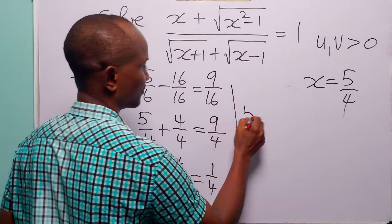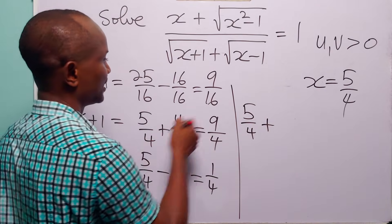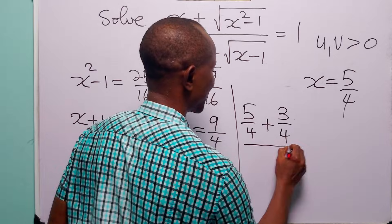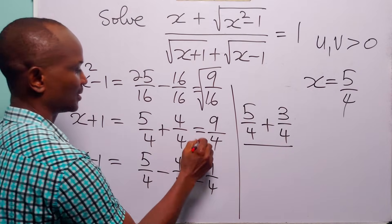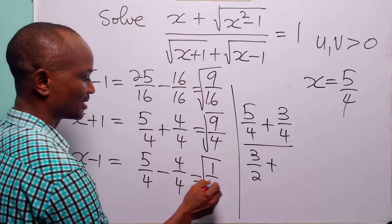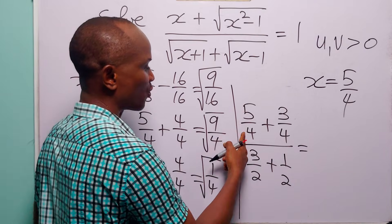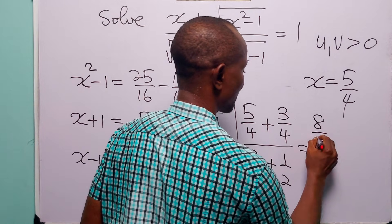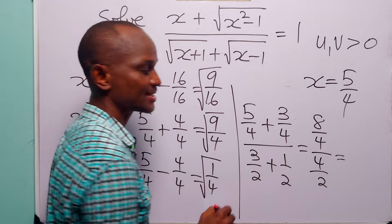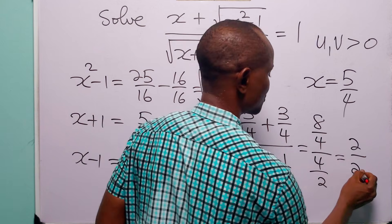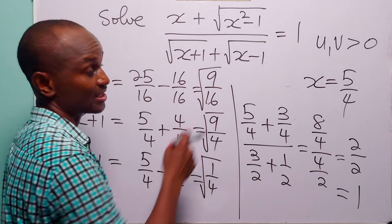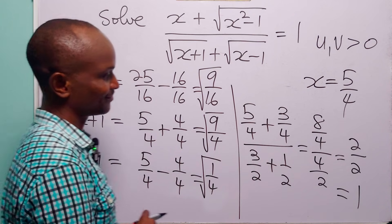Substituting, the numerator is 5 over 4 plus the square root of (x squared minus 1), which is 3 over 4, giving 8 over 4 equals 2. The denominator is the square root of (x plus 1), which is 3 over 2, plus the square root of (x minus 1), which is 1 over 2, giving 4 over 2 equals 2. So 2 divided by 2 equals 1, confirming that x equals 5 over 4 satisfies the equation.